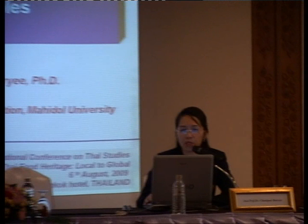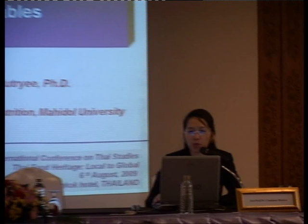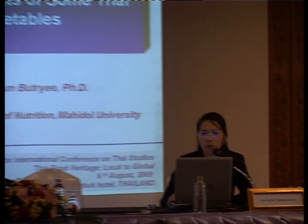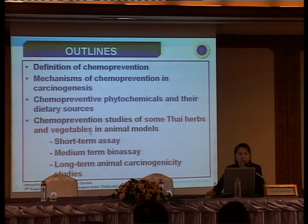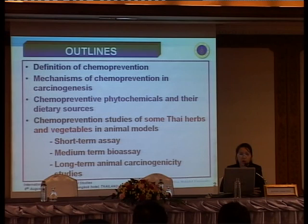My talk today is on the chemo-preventive effects of some Thai herbs and vegetables. This is the scope of my presentation. I would like to give you some information about the definition of chemo-prevention, followed by the mechanism of chemo-prevention in carcinogenesis, chemo-preventive phytochemicals and data resources, and lastly, the chemo-prevention study of some Thai herbs and vegetables in animal models at the National Cancer Institute, Thailand, in collaboration with the Institute of Nutrition, Mahidol University. This means we move from the in vitro model to in vivo.